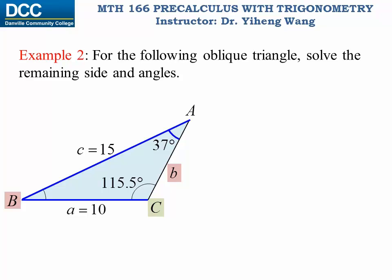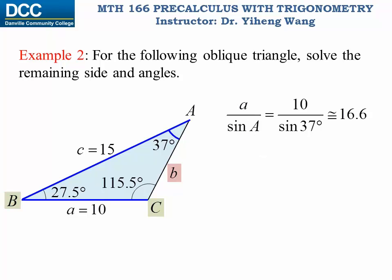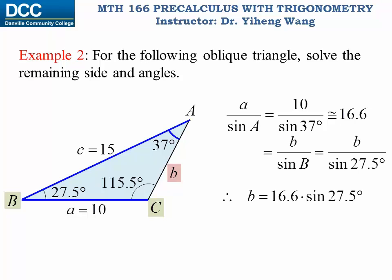Now we know two out of the three angles for this triangle. The remaining angle B can be easily solved as 180 degrees minus A minus C, giving 27.5 degrees. Since we now know angle B, we can apply the law of sines one last time to solve for side b, which is approximately 7.67. Now this triangle is fully solved.